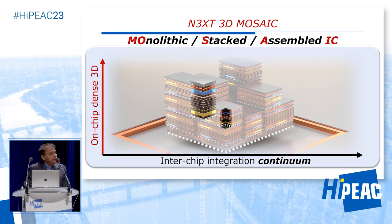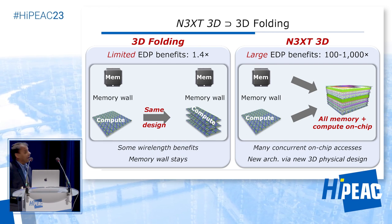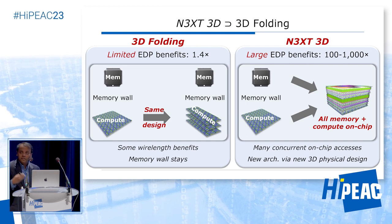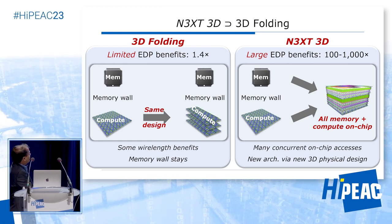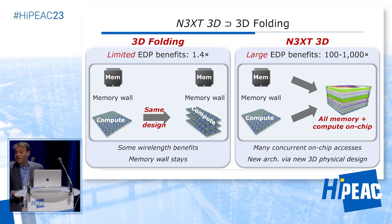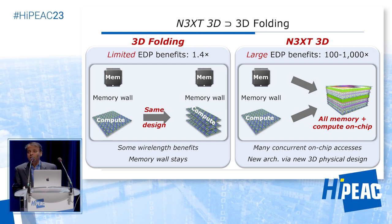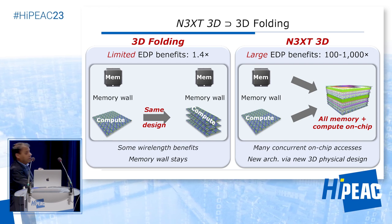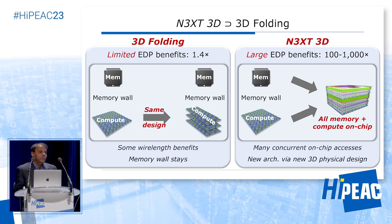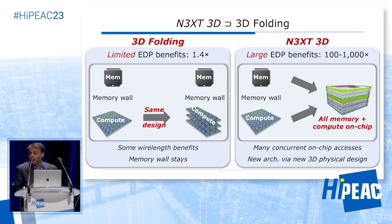When we talk about 3D integration, there is a lot of confusion in the community. Most people, when they think of 3D integration, think about what's shown on the left panel here — you have this compute chip, and what people do is take this compute chip and fold it in the third dimension. I call that 3D folding, and actually there are not much benefits of doing that. Those publications talk about a 20-30% benefit, but in reality there is no benefit, because your memory wall still continues to stay. You just took a compute chip and folded it with a 3D physical design into three layers — that's an absolutely terrible idea, and unfortunately I see a lot of papers talking about that.